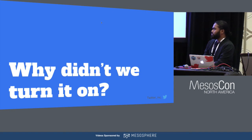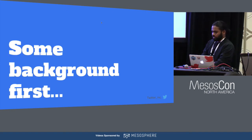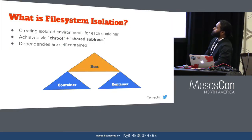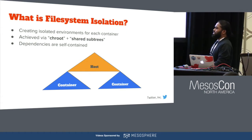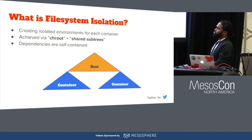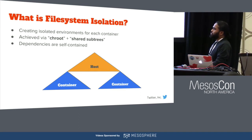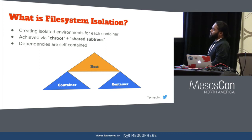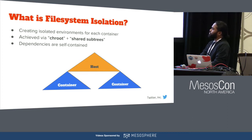So why didn't we turn it on? Before we see why, let me give you some background. File system isolation is a way to create an isolated environment for each container. On Linux, it is achieved with the combination of chroot and shared subtrees. Chroot is just change root, and it helps create environments where dependencies could be self-contained. Here we have an example where we have a host with a couple of containers on them. The containers have their own file system subtrees, separated from each other and from the host.